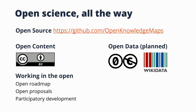We're open science all the way. All of our source code is shared under an MIT license on GitHub. All of our maps are Creative Commons BY — you can freely use and reuse them, only giving us attribution. All of our data is CC0, meaning it's in the public domain. We're working with initiatives like Wikidata to improve access to it. We also work in the open: we have an open roadmap, publish our proposals openly, and are working towards participatory development.